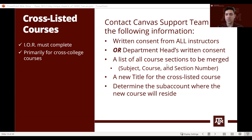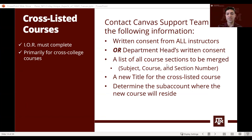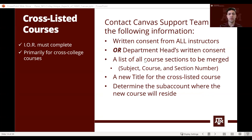Another more complicated scenario involves cross-listed courses — courses that live in two different colleges. You need written consent from all instructors or the department head's written consent, the list of all courses to be merged, the title for the course that will hold all the sections, and you must determine the sub-account where the course will live.